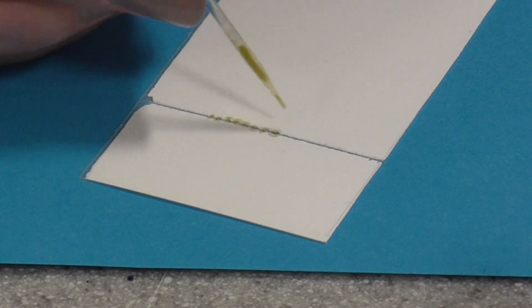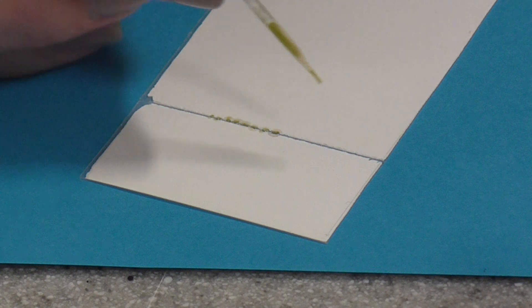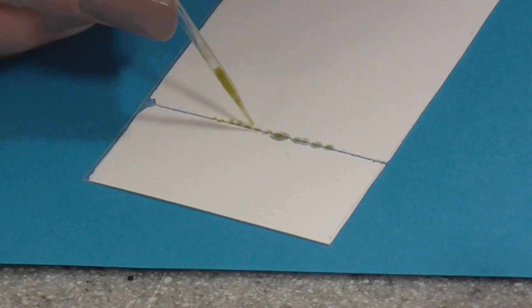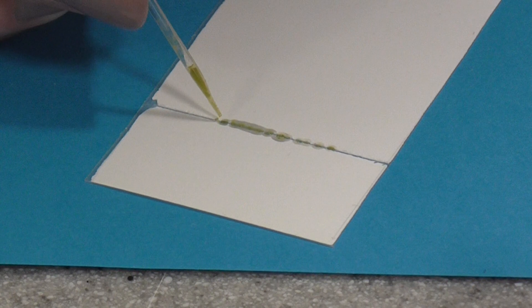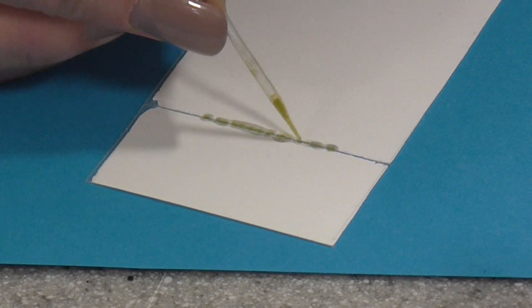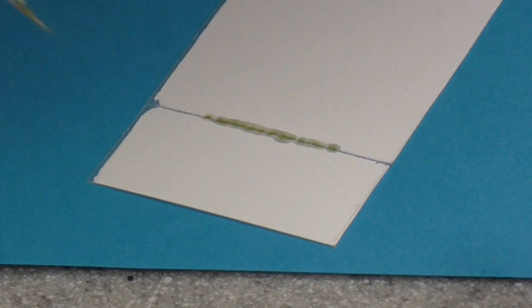Sometimes people are told to put a dot in the middle, but for this, it works better if you just dot along there and produce a kind of line of plant pigment, plant extract, at the bottom there.